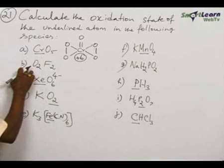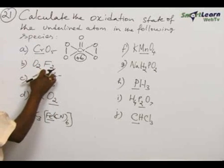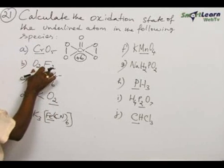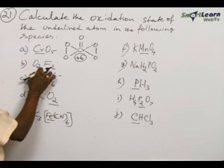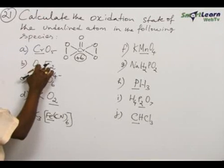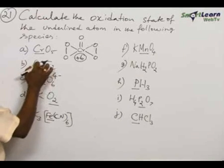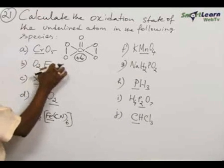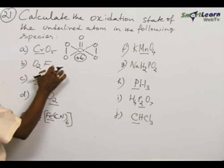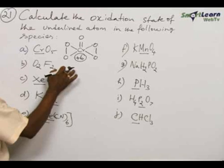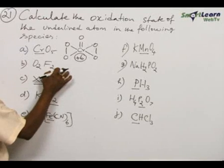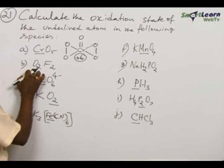Now, come to the second one: B, O₂F₂. This is the oxy fluoride. Fluorine always takes minus 1. Therefore, the two fluoride ions in total give minus 2, so that must be compensated by plus 2.